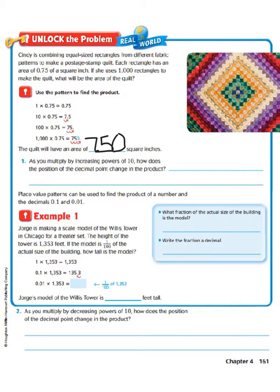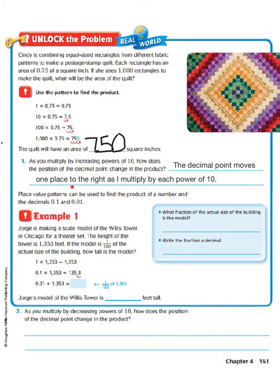As you multiply by increasing powers of ten, how does the position of the decimal point change in the product? Well, the decimal point moves one place to the right as you multiply by each power of 10. So place value patterns can be used to find the product of a number and the decimals 1 tenth and 1 one hundredth.